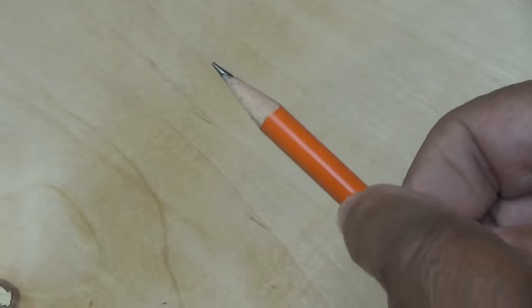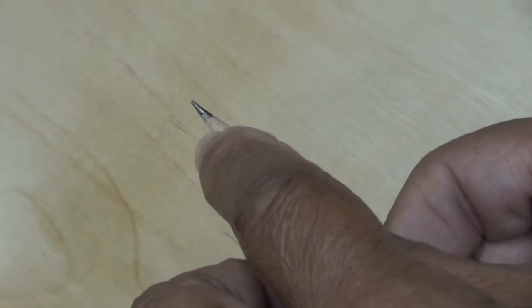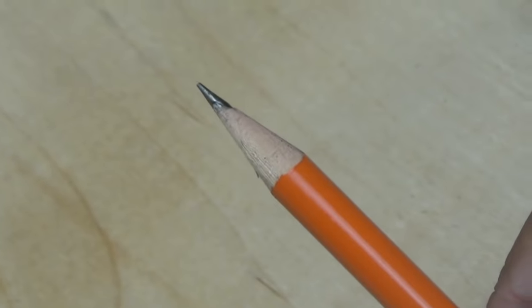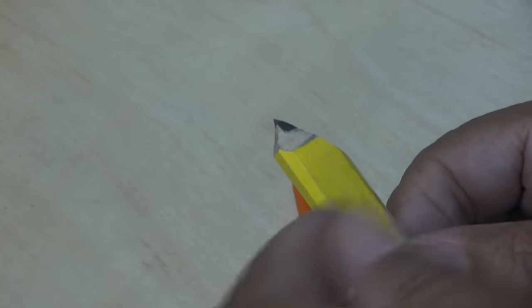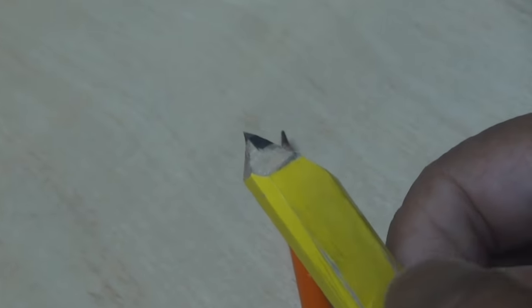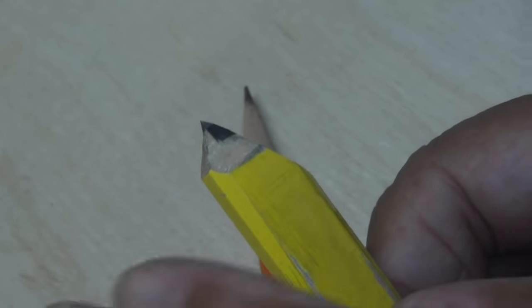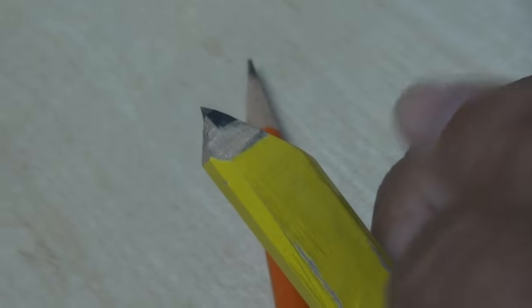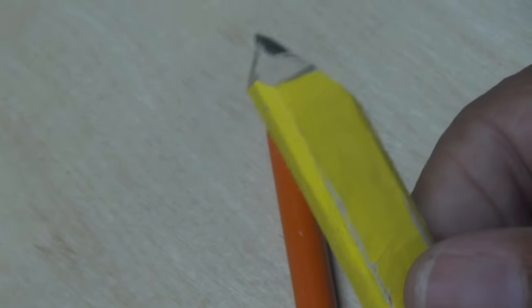So here I have a number two pencil, and it can only be sharpened one way, and that is to a point and a centered point. So a carpenter's pencil is different because there's only one way to sharpen a number two, but a carpenter's pencil, there's a few different ways. And depending upon how you're going to use the pencil, kind of directs you on how to sharpen it. Now this pencil here has been sharpened to be used as a scribe tool. That's right, I said a scribe.